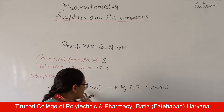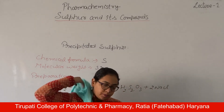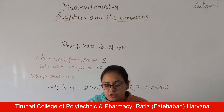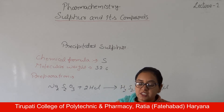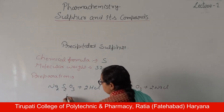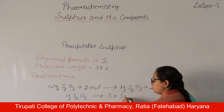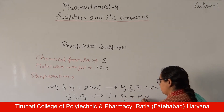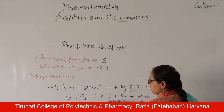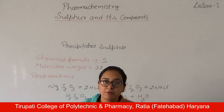The unstable thiosulphurous acid decomposes to give precipitated sulphur. It is also produced from petroleum, natural gas, and released fossil resources as hydrogen sulphide (H2S). The reaction is: H2S + SO2 + H2O gives precipitated sulphur.